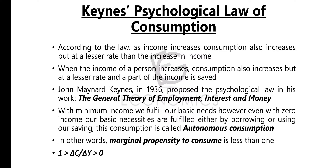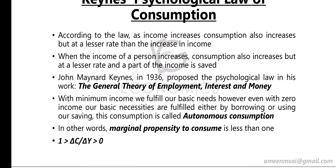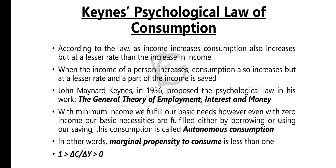When the income of a person increases, consumption also increases but at a lesser rate, and a part of the income is saved. This law was put forward by John Maynard Keynes in 1936 through his book 'The General Theory of Employment, Interest and Money.'